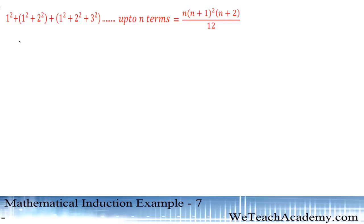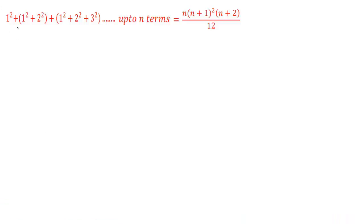Here we have to prove that 1² + (1² + 2²) + (1² + 2² + 3²) and so on up to n terms is equal to n(n+1)²(n+2) divided by 12.